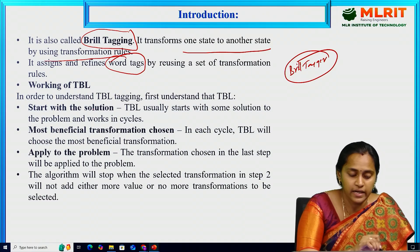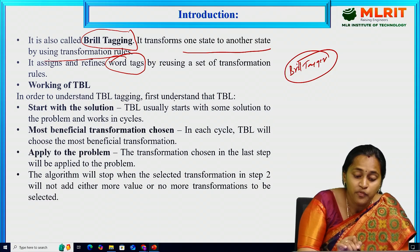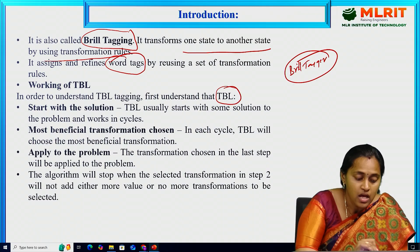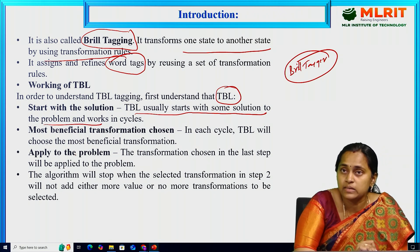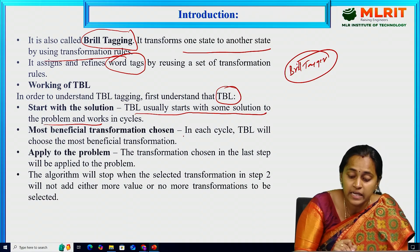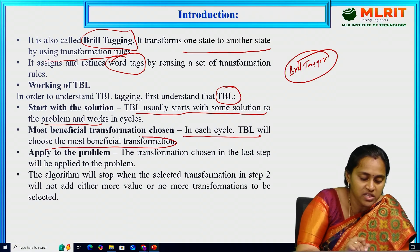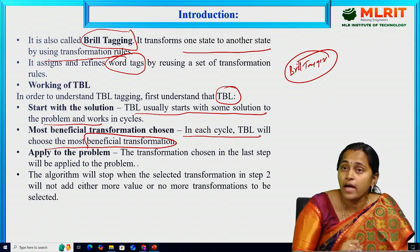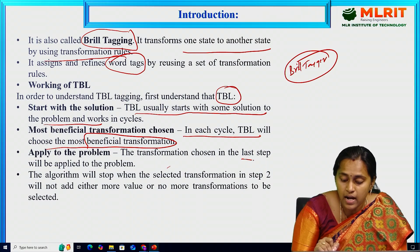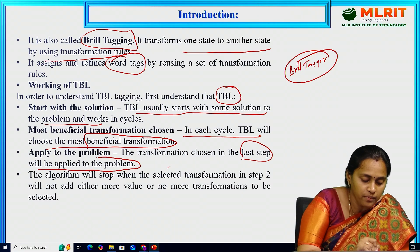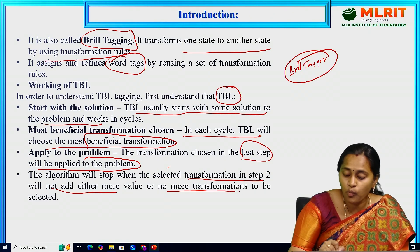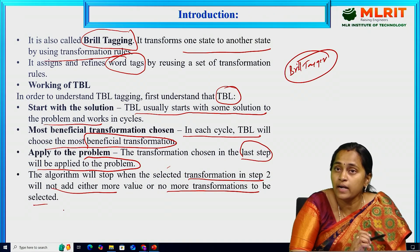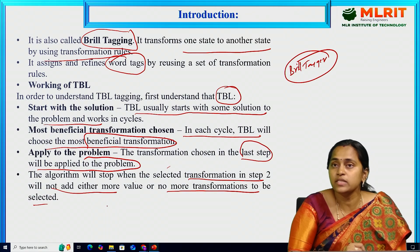How does TBL work? In order to understand TBL tagging, TBL usually starts with some solution to the problem and works in the form of cycles — that means a step-by-step procedure. In each cycle, TBL will choose the most beneficial transformation and apply it to the problem. The transformation chosen in the last step will be applied to the problem. The algorithm will stop when no more transformation adds value — that is, when there are no more transformations to be selected.